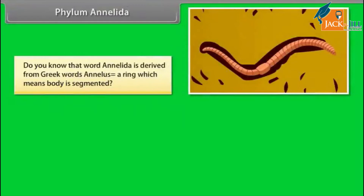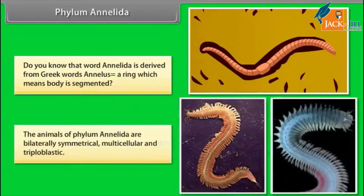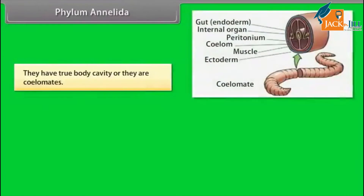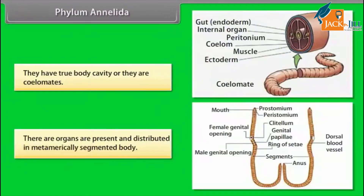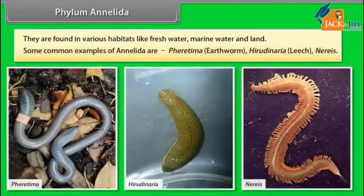Phylum Annelida. The word annelida is derived from Greek words annelus, ring, which means the body is segmented. The animals of Phylum Annelida are bilaterally symmetrical, multicellular, and triploblastic. They have a true body cavity — they are coelomates. There are organs present and distributed in a metamerically segmented body. They are found in various habitats like freshwater, marine water, and land. Some common examples of Annelida are Pheretima, the earthworm, Hirudo, the leech, and Nereis.